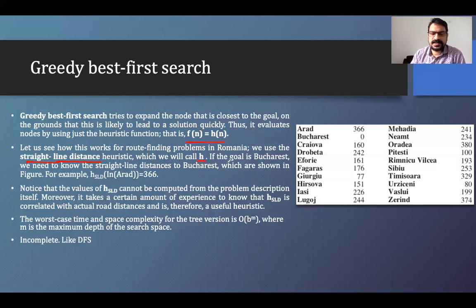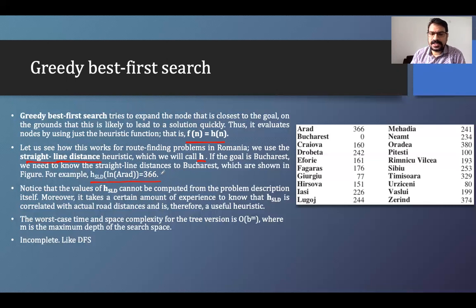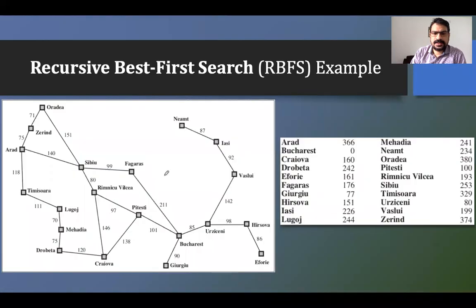If the goal is Bucharest, we need to know the straight-line distance to Bucharest, as shown in the figure. For example, h_SLD in Arad means: if I am in Arad city and need to reach Bucharest, I apply the straight-line distance method to find that value, which is 366. This means from Arad, if you go to Bucharest in a straight line, the distance is 366 kilometers.